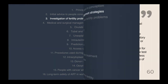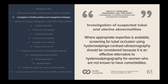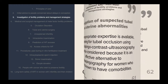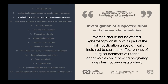Further investigations include the investigation of suspected tubal and uterine abnormalities. Women not known to have comorbidities such as pelvic inflammatory disease, previous ectopic pregnancy or endometriosis should be offered hysterosalpingography (HSG) to screen for tubal occlusion, as it is a reliable test and less invasive than laparoscopy. Where appropriate expertise is available, hysterosalpingocontrast ultrasonography should be considered as a more effective alternative to HSG. Women thought to have comorbidities should be offered laparoscopy and dye so that tubal and other pelvic pathologies can be assessed simultaneously.